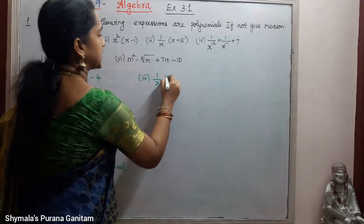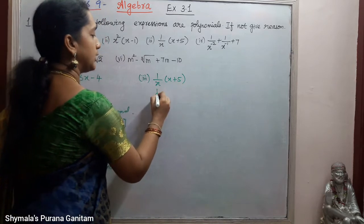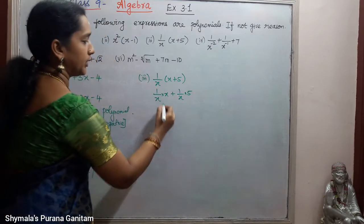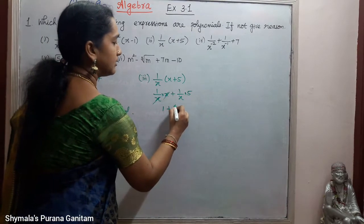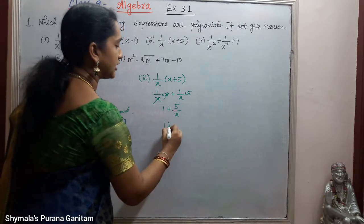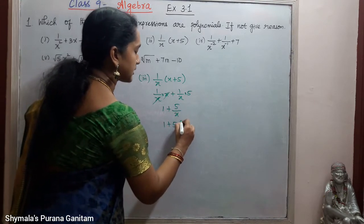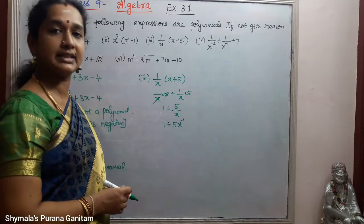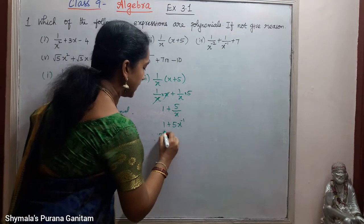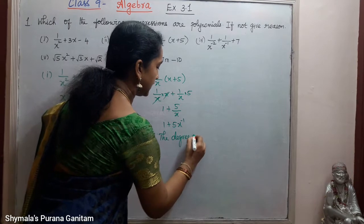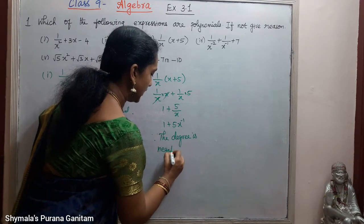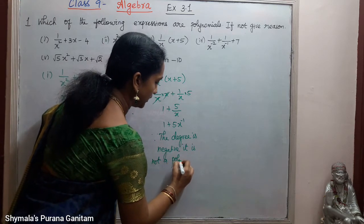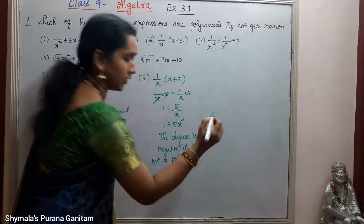Third one is (1/x)(x + 5). We simplify: (1/x)·x + (1/x)·5 = 1 + 5/x = 1 + 5x⁻¹. Since the degree is negative (−1), it is not a polynomial.